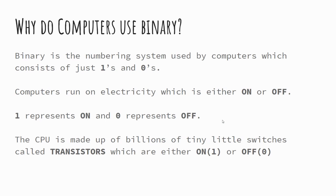Computers use binary because they run on electricity — they are ultimately electrical systems that can either be switched on or off. With electricity there is no half on or half off; think of it like a light bulb with a switch. The CPU, the main component that does all the calculations, is built up of billions of tiny switches called transistors, which are either on or off, controlled by electrical pulses and signaling sent through them.